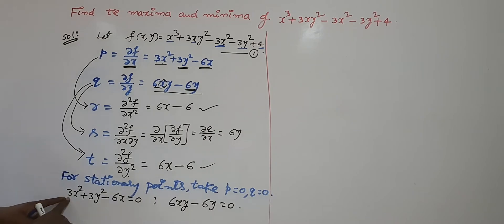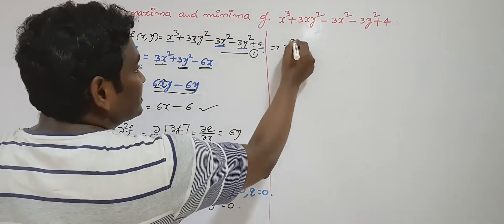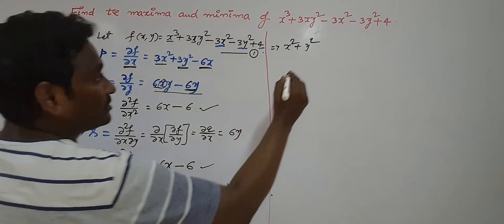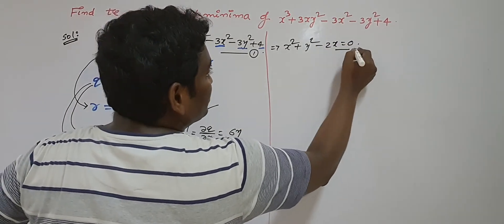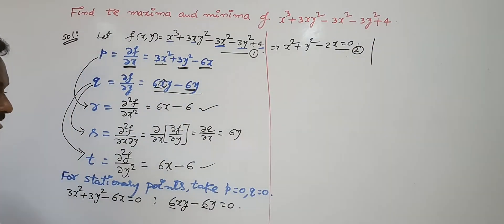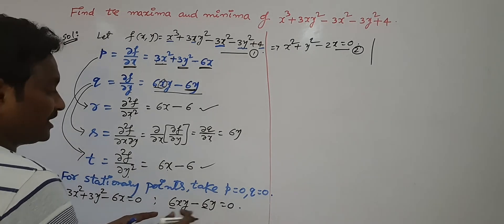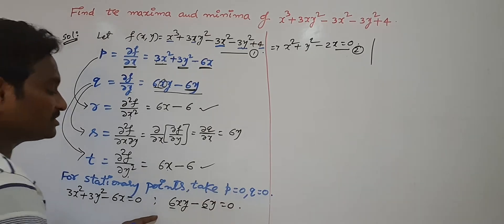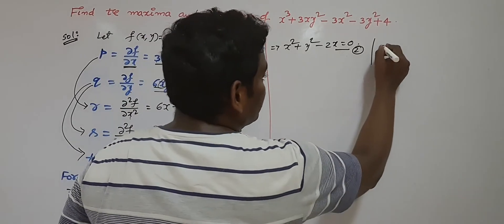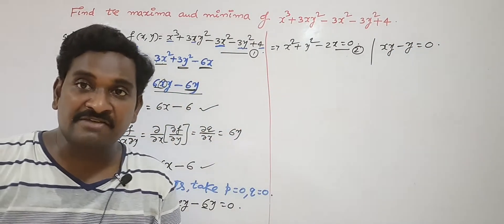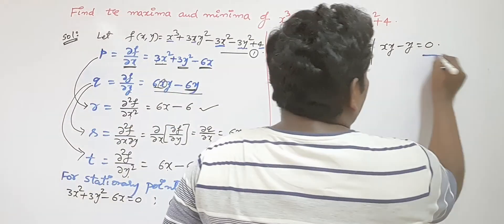Here 3 is a common factor, so dividing through gives x² + y² - 2x = 0 — take this as equation number 2. For the other equation, 6 is the common factor. Dividing gives xy - y = 0 — take this as equation number 3. We have to solve both equations for stationary values.